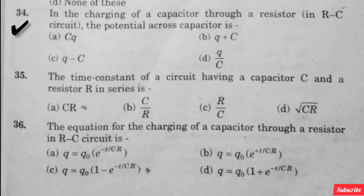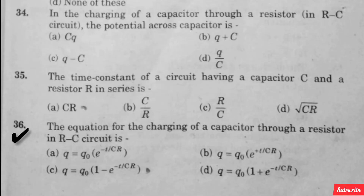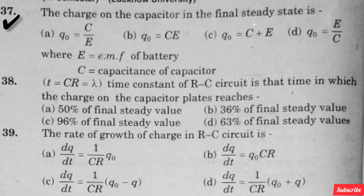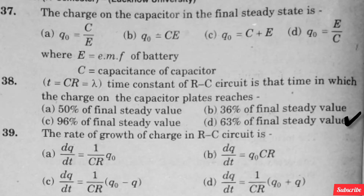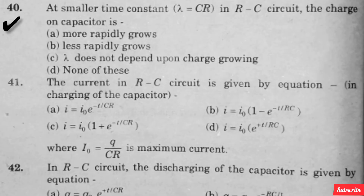In the charging of a capacitor through a resistor in RC circuit, the potential across capacitor is — option D is right. The time constant of a circuit having capacitor C and resistors in series is — option A is right. The equation for the charging of the capacitor through a resistor in RC circuit is — option C is right. The charge on the capacitor in the final steady state is — option B is right. T = CR = λ, the time constant of RC circuit, is the time in which the charge on the capacitor plate reaches — option D is right. The rate of growth of charge in RC circuit is — option C is right. At a small time constant in RC circuit, the charge on capacitor is — option A is right.